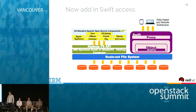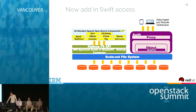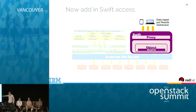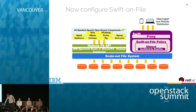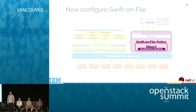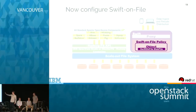Second, we added the Swift software stack on top of the scale-out file system. Now we have both the Hadoop stack and the Swift stack sitting on top of the scale-out file system. The key element is a PACO deployment with proxy and object servers on the nodes accessing the lower-level scale-out file system. The last aspect is the Swift on file policy, which Luis will explain — how we use the Swift on file policy inside standard Swift to enable access to the scale-out file system.